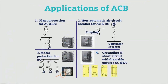ACBs are used for plant protection in AC or DC sources. You can also manually trip the ACB by pressing this button. For motor protection, ACBs are used, and in case of a short circuit current the ACB can trip and protect the load.